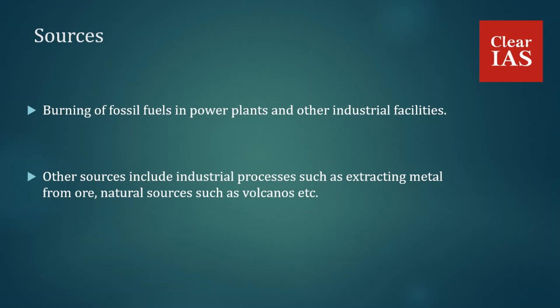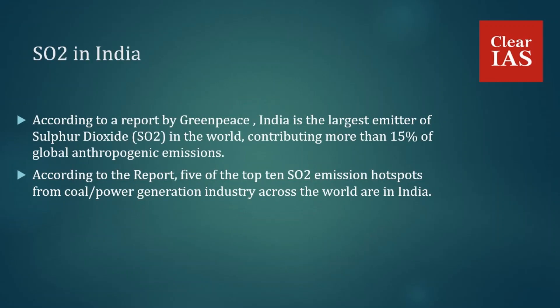Now we'll discuss the condition of sulfur dioxide pollution in India and how badly it affects our country. According to a recent report by Greenpeace International, an environmental NGO, India is the largest emitter of sulfur dioxide in the world and contributes over 50 percent of global anthropogenic emissions. The primary reason for India's high emission output is the expansion of coal-based electricity generation over the past decade. According to the report, five of the top 10 SO2 emission hotspots from coal power generation across the world are in India.